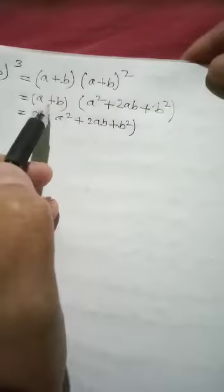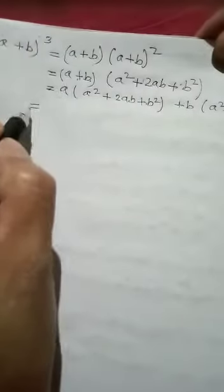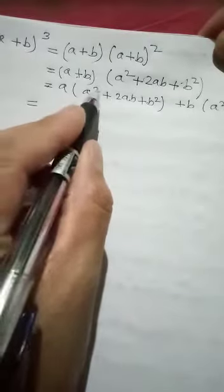So we have two separate brackets. We break the first bracket: take 'a' and multiply into (a² + 2ab + b²), then write the next part plus 'b', and multiply 'b' into the same second bracket (a² + 2ab + b²).